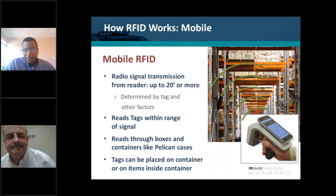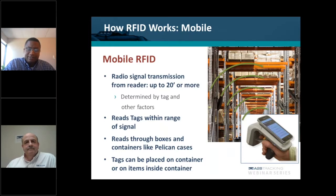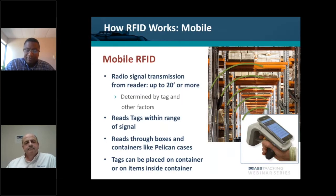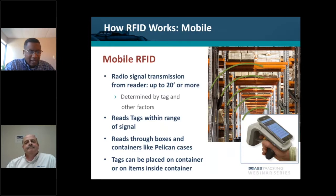Whether it's a mobile device like pictured here, or if it's fixed equipment — readers and antennas — the passive tags are stimulated when they're hit with the RF frequency. When hit with that signal, they backscatter back the information you're looking for in the tag.